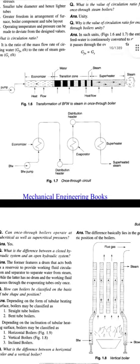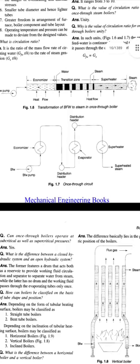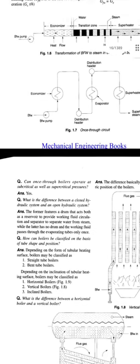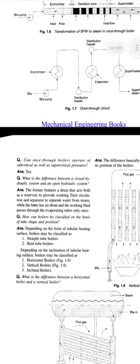The once-through boiler circuit is shown in the second picture. It shows the feed water pump feeding water to the economizer. Through the distribution header, the evaporator is next, followed by the superheater. The outlet is superheated steam. This is the once-through boiler.